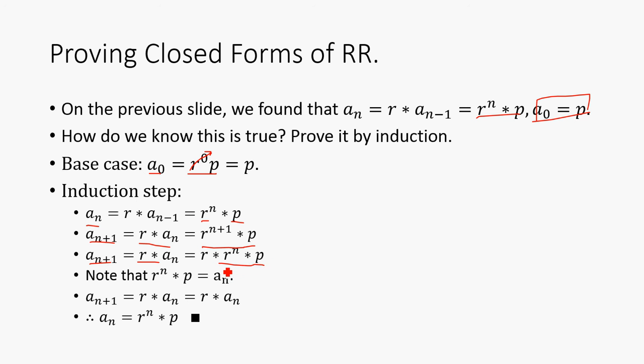But note that r^n * p, this guy right here, is just equal to a_n by definition. So that means that a_(n+1) is equal to r * a_n. Well, this is exactly what we wanted to show. We kept one thing on the left hand side the whole time, and we showed that the right hand side was equal to that. So we've just proved our inductive step.